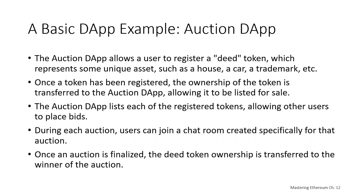We're talking about an auction DAP. The auction DAP is here to demonstrate how these different decentralization tools can work. Our auction DAP is going to allow a user to register a non-fungible token representing a deed to some unique asset — perhaps a house, a car, a trademark, some artwork, whatever. Your non-fungible token under the ERC-721 standard can represent any of those things.